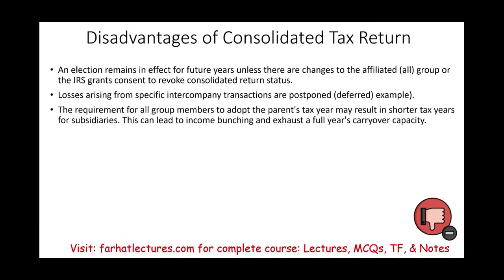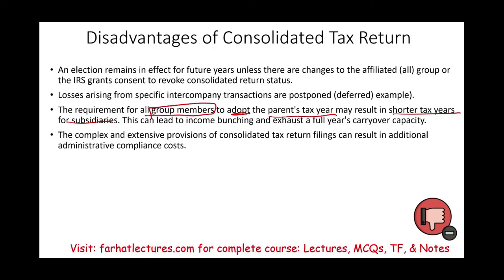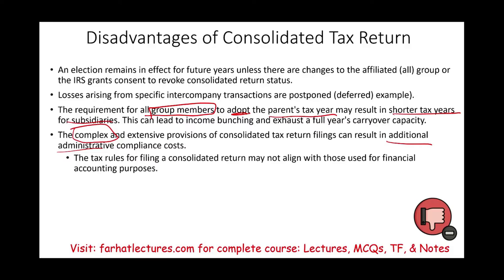Also, all group members must adopt the parent's tax year, which could result in a shorter tax year for some subsidiaries. This is problematic because with a partial year you may not be able to take full advantage of certain bunching strategies or carryover deductions. Additionally, the complex and extensive provisions of consolidated tax returns may result in additional administrative compliance costs — it simply costs more money. The tax rules for filing a consolidated return may also not align with those used for financial accounting.